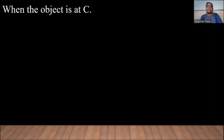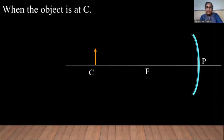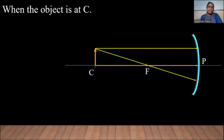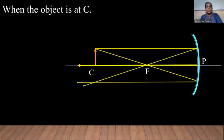Let us take the second case: when the object is at C. Let us place the object at C. When the rays are incident on the mirror, the rays get reflected to give the image at C — at the same point as the object. You can see the image is real, inverted, and of the same size as the object.